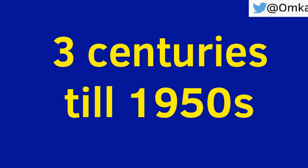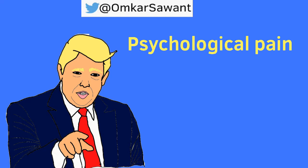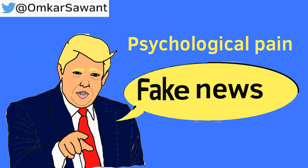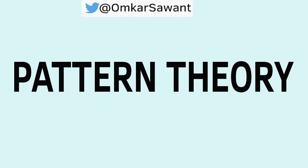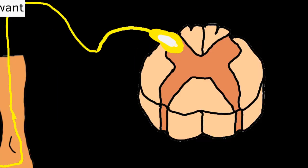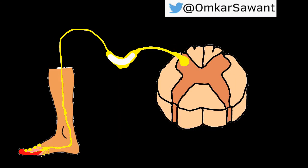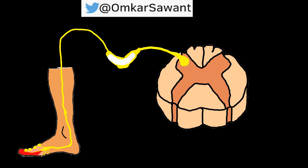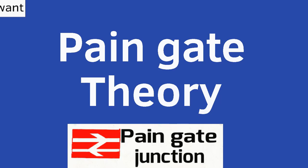The drawback was that this theory was very simplistic and did not take into account any psychological factors related to pain. Several attempts were made to upgrade this theory. The pattern theory did emerge, which attempted to put the role of the dorsal root ganglion in the spinal cord for the pain pathway, shifting it away from the periphery, and therefore paved the way to the pain gate theory.